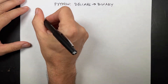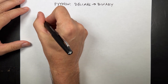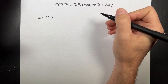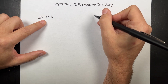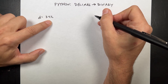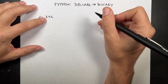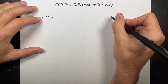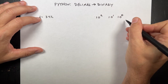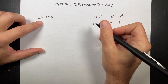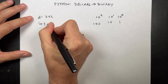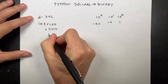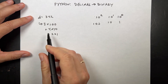So just a real quick review. If I have a number, let's say D equals 342 in decimal, base 10. Each place is a power of 10, so we have 10 to the 0, 10 to the 1, 10 to the 2 — that's 1, 10, 100. So this really means 3 times 100 plus 4 times 10 plus 2 times 1, and you get 342.